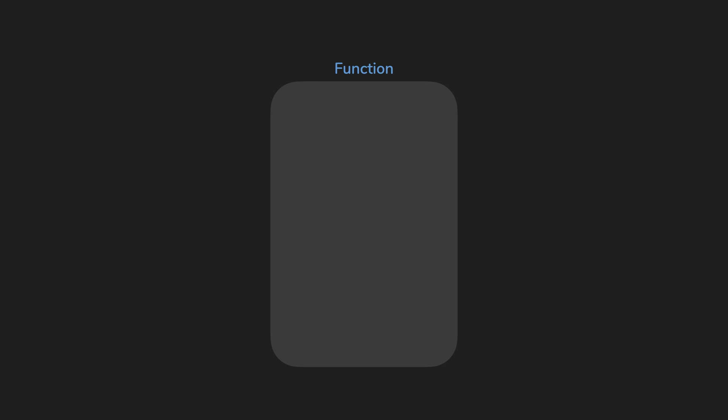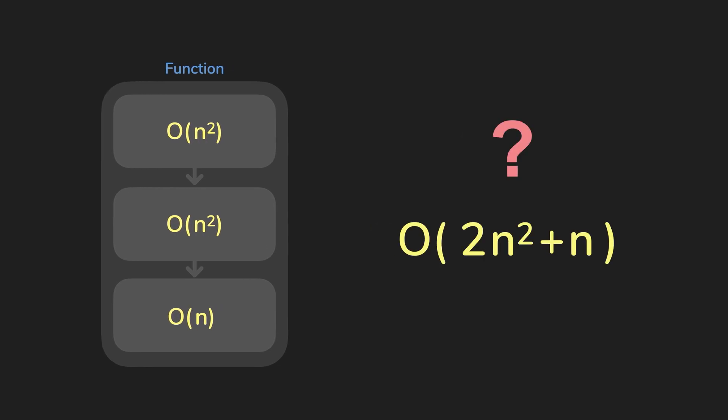And when we are trying to figure out the big O of an algorithm, we also need to drop the non-dominant terms. For example, let's say there is a function that consists of three parts that runs sequentially. The first part and the second part has an algorithm of O of N squared. And the third part is an algorithm of O of N. You would think that this would be O of two times N squared plus N.